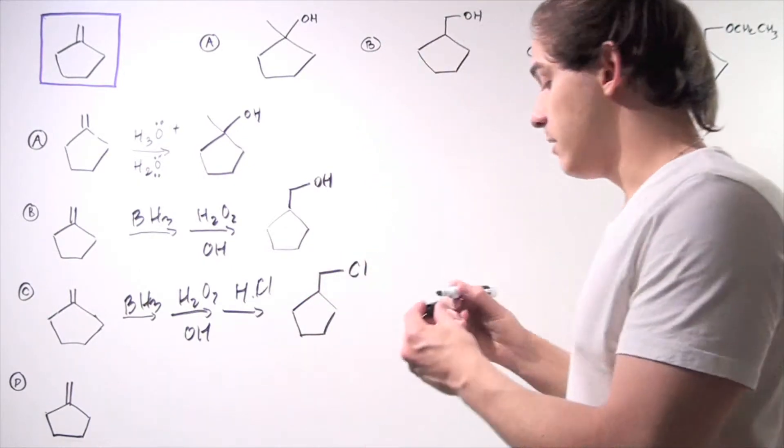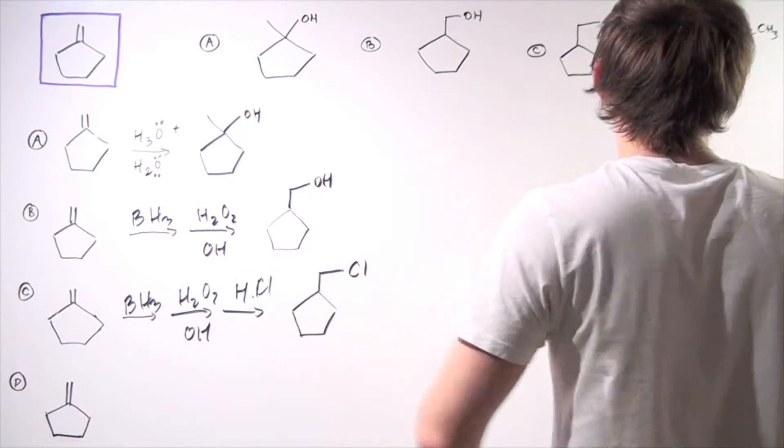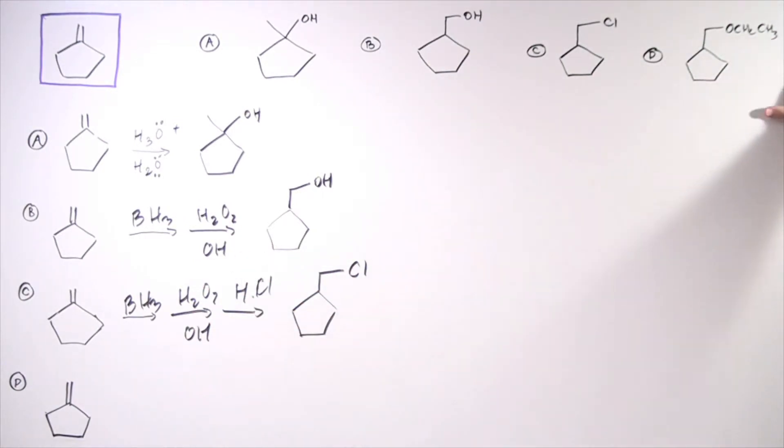Finally, we want to produce the following molecule. This is similar to the previous molecules, but now we have the OCH2CH3 group attached. There are a few ways to solve this problem. We can choose to produce B or C and then produce D.